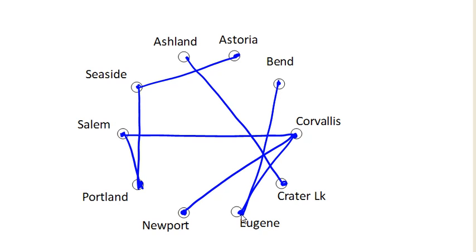How about Bend to Salem? No, that would end up creating a circuit. How about Astoria to Newport? That would create a circuit, so no. How about Salem to Astoria? No, that one would create a circuit. How about Corvallis to Seaside? Nope, that would create a circuit. How about Portland to Bend? Portland to Bend would also create a circuit. How about Astoria to Corvallis? Astoria to Corvallis would also create a circuit.